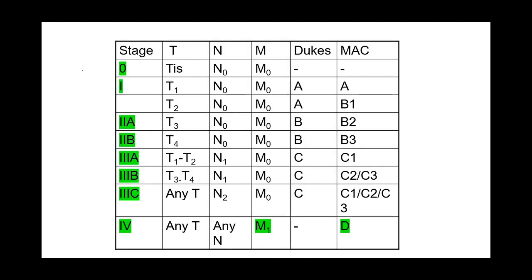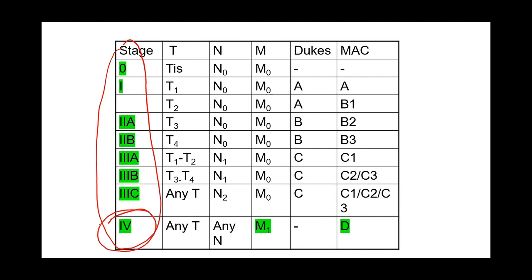This table shows the various staging systems — TNM, Duke, modified Duke, Astler-Coller modification, and the group staging. Whenever you hear a tumor is stage four, it means it is advanced with distant metastasis. Stage one is early. Stage zero is carcinoma in situ.